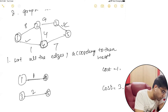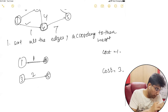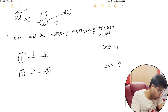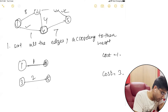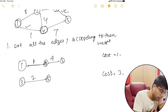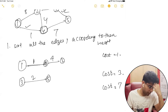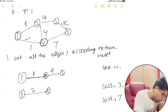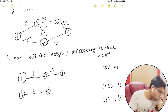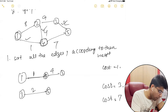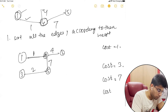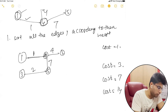Now, what is the next minimum weighted edge? That is between nodes 2 and 4. So we take this edge at a cost of 4, and now our cost increases to 7. This edge is also being taken. Now, what is the next minimum weighted edge? That is between 4 and 5, and we take this edge so the cost increases to 14.